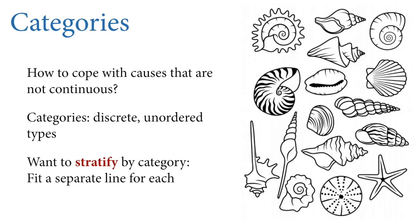Categories come up all the time in data analysis — how do we cope with causes of phenomena that are not continuous? We're going to talk about categories, by which I mean discrete unordered types, like the seashells on the right of this slide. There's no gradation between the different types — they're real types, and if you count them, you have counts of each type. Typically what we want to do on the statistical side is to stratify our analysis by each category — in a linear regression, that means fitting a separate line for each category.